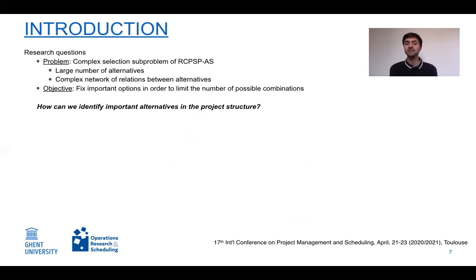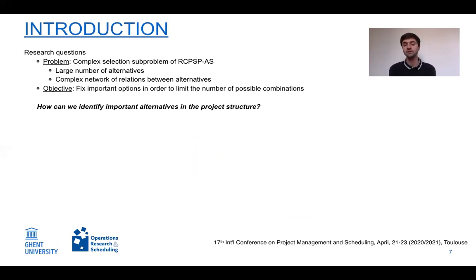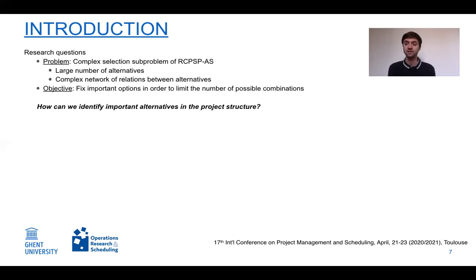We observed that the selection subproblem of the RCPSP-AS is highly complex — not only due to the large number of alternatives in practically sized projects, but also because of the complex relations between them. Our question was: can we fix certain alternatives to limit the number of possible combinations, and how can we identify important alternatives that the project manager can fix with high certainty and therefore need not reconsider in the selection subproblem?